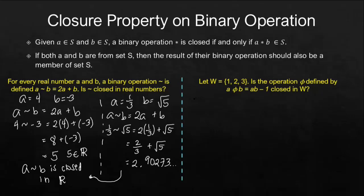Say, for example, let's use 3 phi 2. So, we will have 3 times 2 minus 1. 3 times 2 is 6 minus 1. This is 5. And obviously, 5 is not an element of set W.